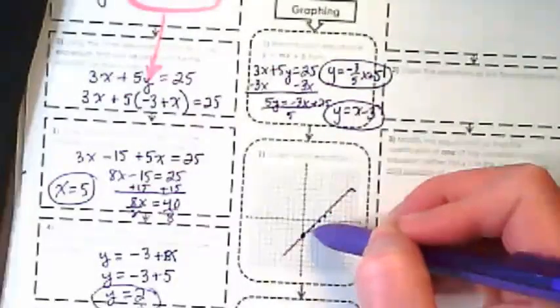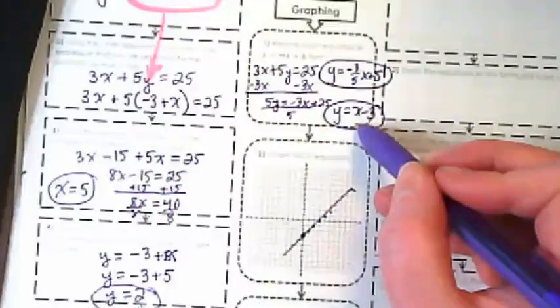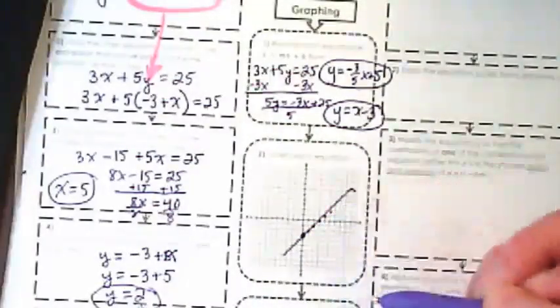I started at negative 3, and this slope shows us that it's x only, so that's 1 over 1. So I just went up by 1 over 1.